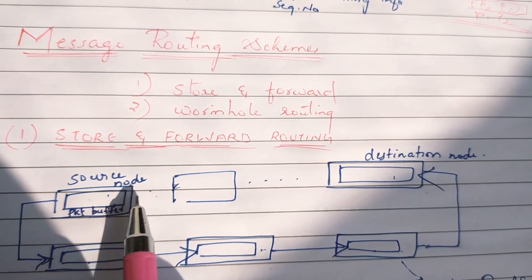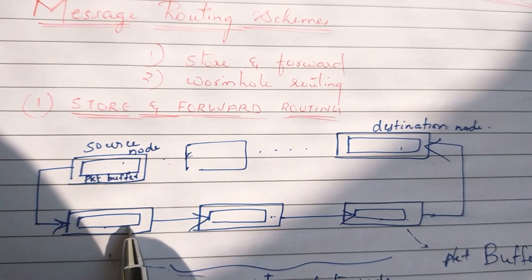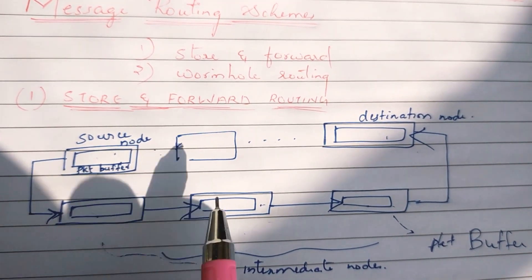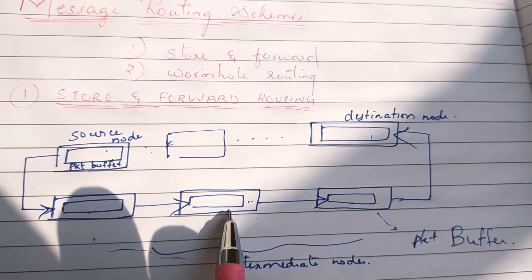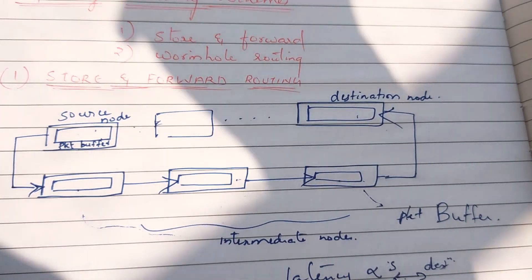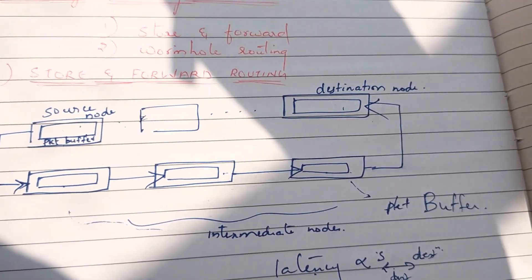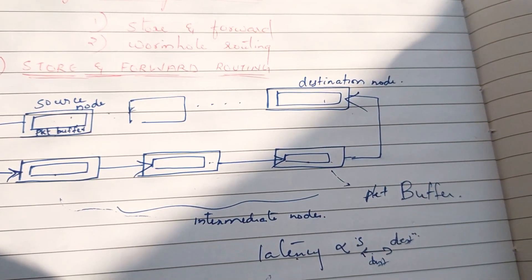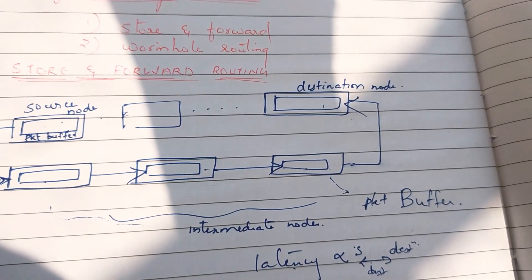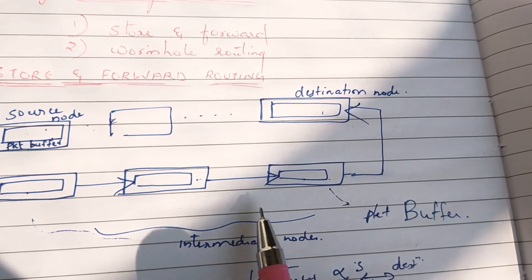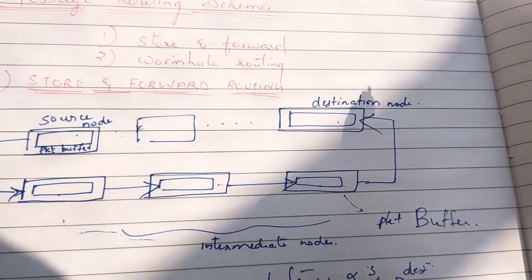In a packet buffer, the source node transmits the packet and stores it in the corresponding buffer. Then it forwards to the next node. Before moving to the next node, the entire packet must be stored. The packet is stored and forwarded at each intermediate node until it reaches the destination. That is store-and-forward routing.